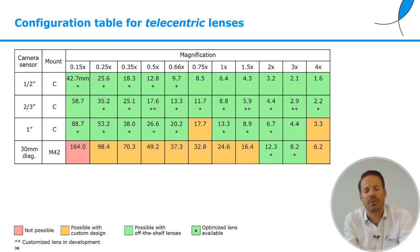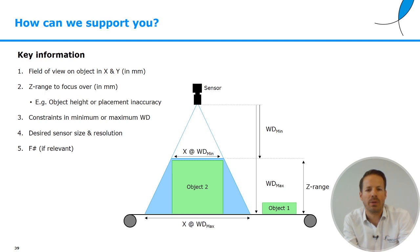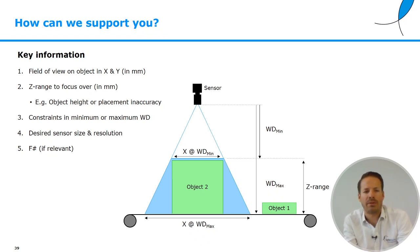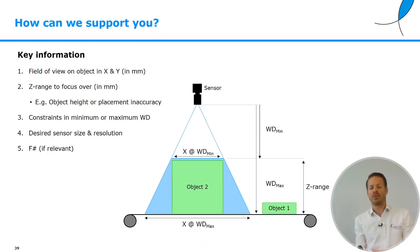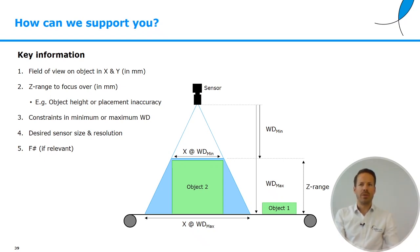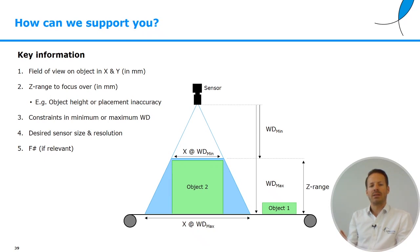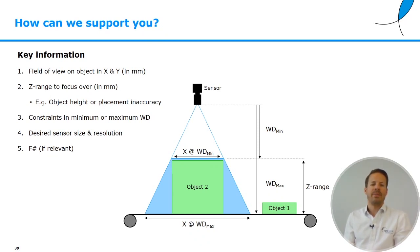If you have a problem to solve and would like to ask us for advice, please provide these five key pieces of information: the field of view of your object; the Z range to focus over (your object height or placement inaccuracy); any constraint on minimum or maximum object distance; your desired sensor size and resolution; and if relevant, the F number — for example, for low-light conditions like iris recognition, you might want a low F number.